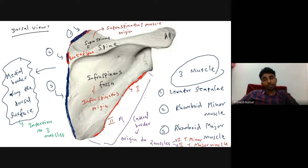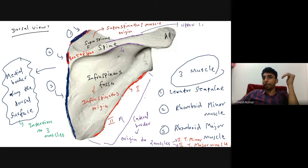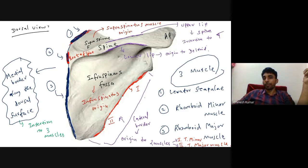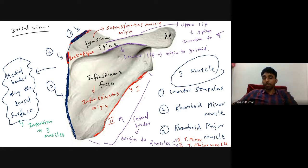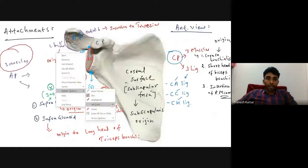Regarding the spine of scapula: the upper lip of the spine gives insertion to the trapezius muscle, and the lower lip of the spine gives origin to the deltoid muscle. So not only the acromion process, but also the upper and lower lips of the spine of scapula give attachment to the trapezius and deltoid muscles respectively.